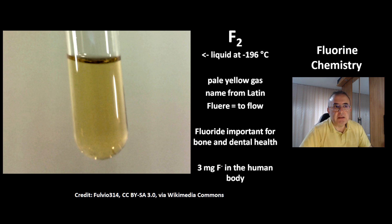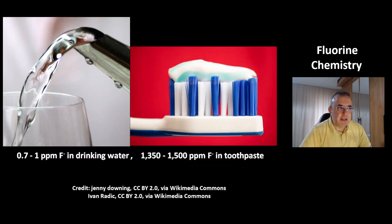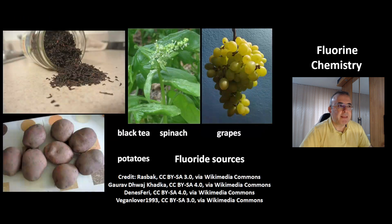Fluoride is important for dental health and bone health. The human body contains about 3 mg of fluoride. Fluoride is added to drinking water at a concentration of 0.7 to 1 parts per million. Toothpaste contains 1350 to 1500 parts per million fluoride. Black tea, spinach, grapes, and potatoes are all good sources of fluoride.